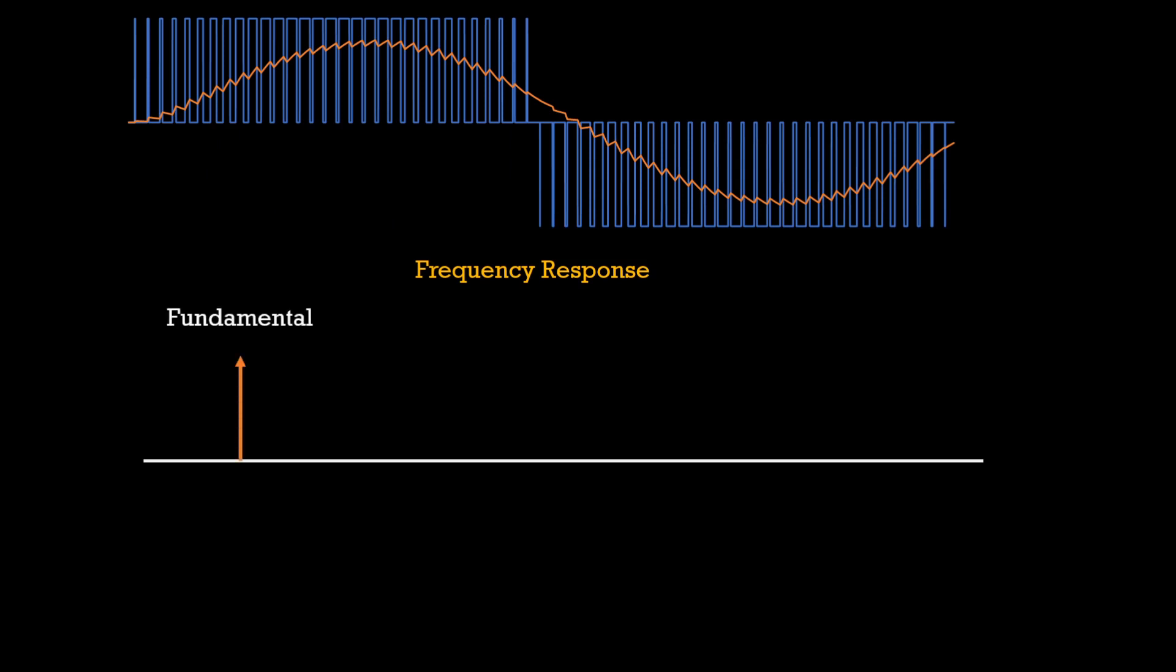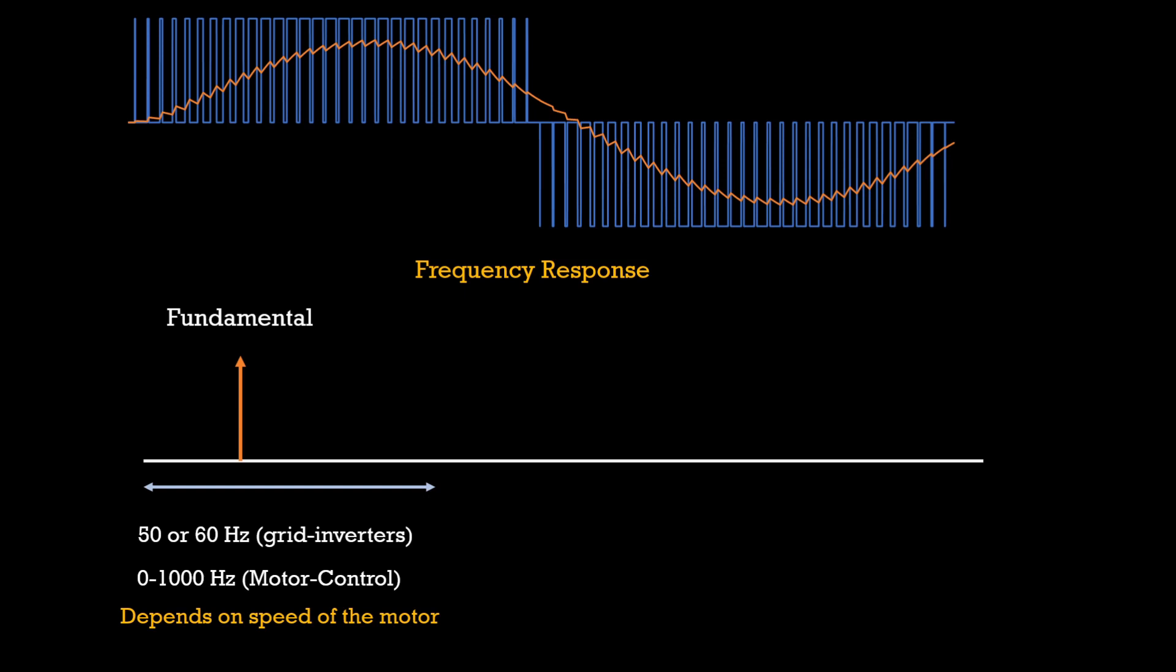The fundamental component of this square wave is nothing but the frequency of the reference sine wave and for usual grid-tied inverters, this would be 50 hertz or 60 hertz. But in case of motors, it varies from 0 to generally less than 1000 hertz. This depends on the speed of the motor and number of pole pairs. If a ramp is 20 kilohertz, we will have another frequency component at 20 kilohertz in the frequency spectrum. Definitely, there will be harmonics of the square wave also.